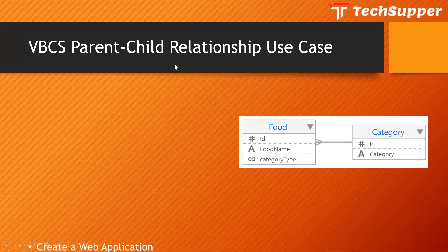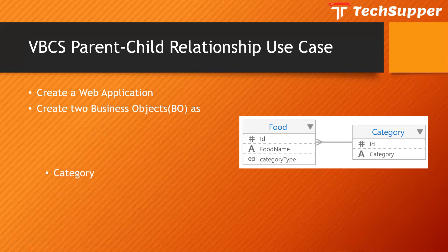In this use case, we are going to create our web application first, and then we are going to create two business objects — one is Category and the second is Food. The Category will have food categories like fruits, nuts, and vegetables. Food will have associated fruit names, vegetable names, and nut names.